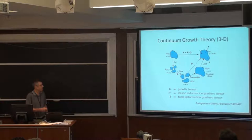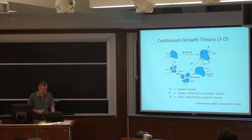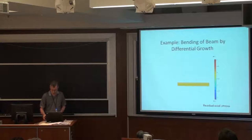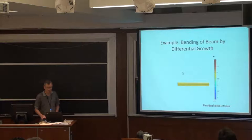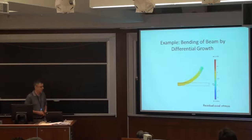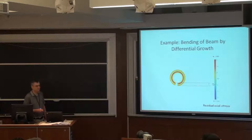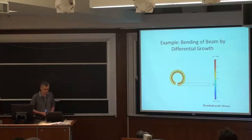The key to modeling morphogenesis is the growth tensor G. It can be either specified as a function of time and place in the embryo, or found through some sort of feedback law. To illustrate: we have a beam composed of two layers; the bottom layer undergoes specified longitudinal growth while the top layer remains passive. This is like a bimetallic strip when heated — it bends all the way around into a circle. You can see that there's a relatively complex residual stress distribution that builds up inside.